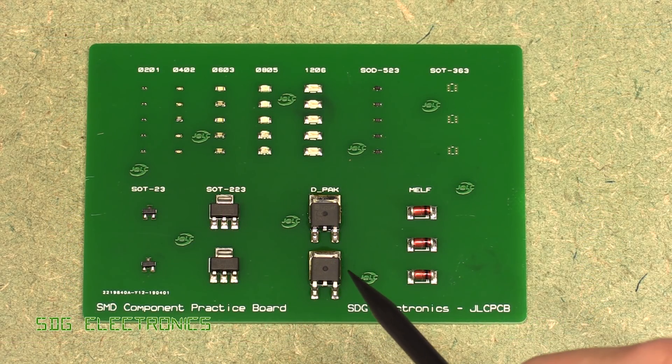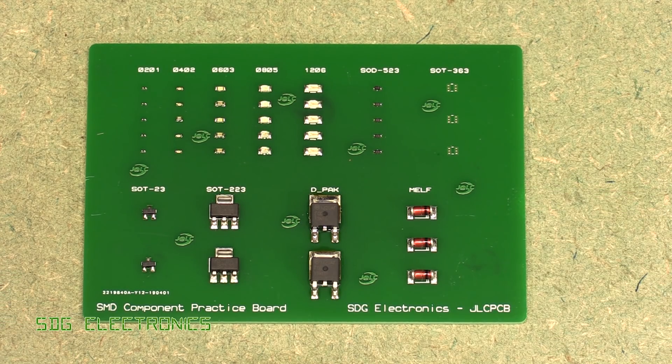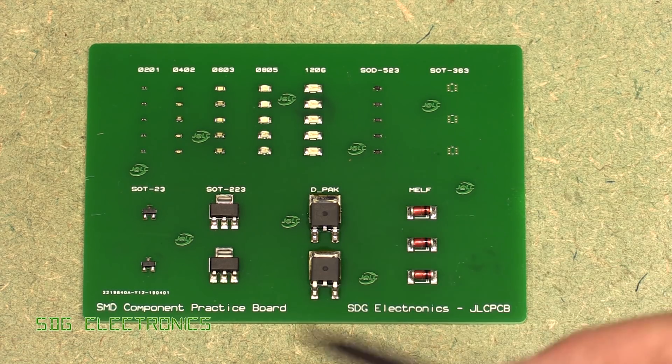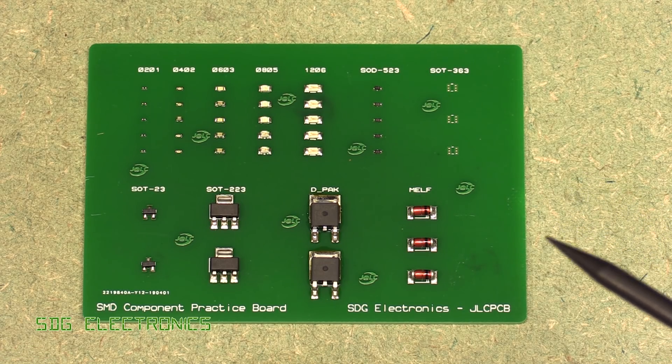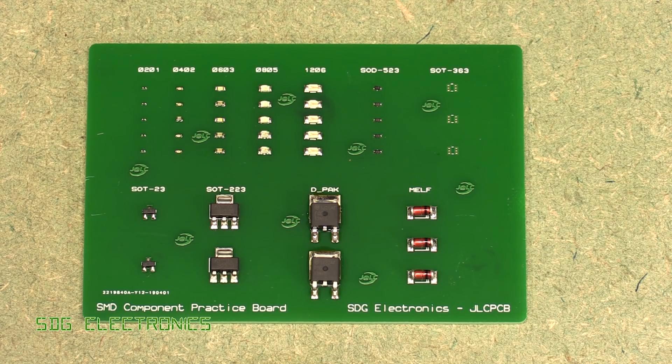There we go, that's this board pretty much perfectly reflowed. Hopefully you can see that was a really simple process - just apply the solder paste through the stencil, apply the components, and then you just need to heat up the board.